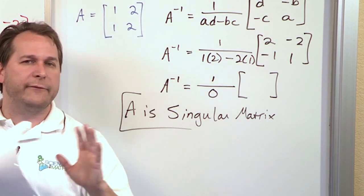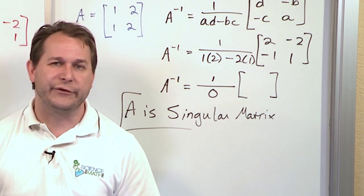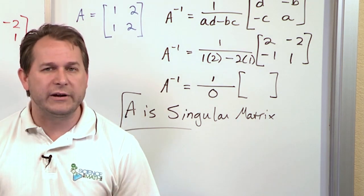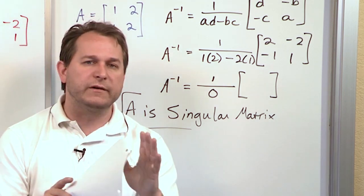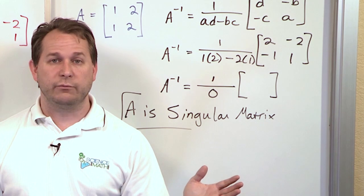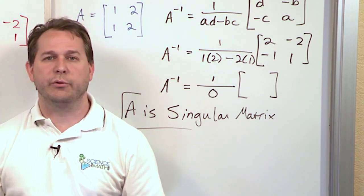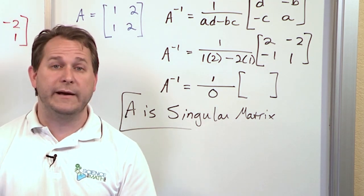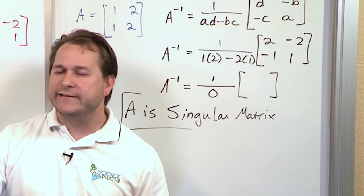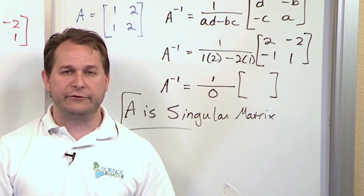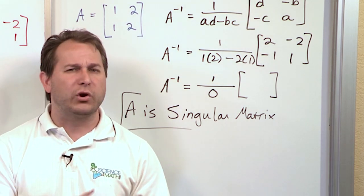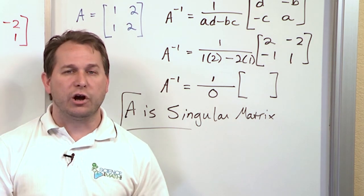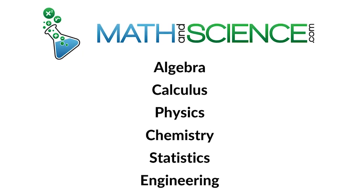The big thing to take away is that for every matrix you can try to calculate the inverse. Sometimes you can't, so we call it singular. Most of the time you can, and the property of an inverse matrix is such that when you take the inverse and multiply it by the original matrix, you simply get an identity matrix — the number one expressed as a matrix. We've limited this discussion to two by two matrices to keep the concept simple. In the next section I'll teach you how to calculate inverses of larger matrices, which will be incredibly useful as you go through linear algebra.